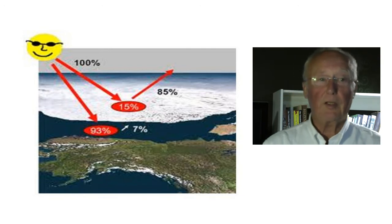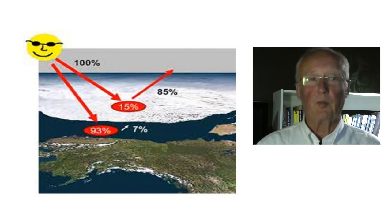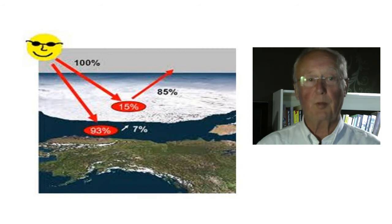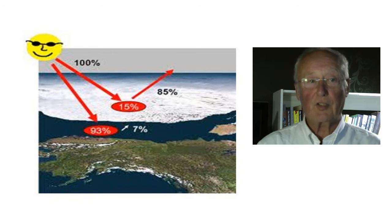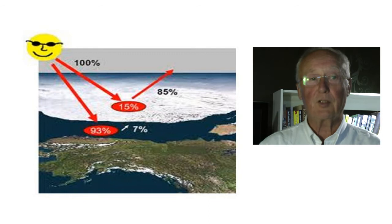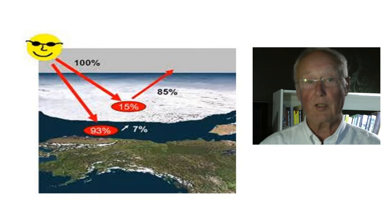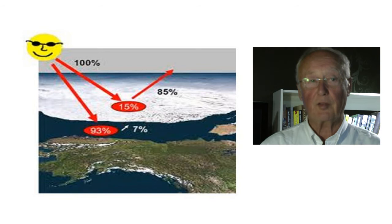This slide illustrates the relative heat-absorbing or reflecting characteristics between bright ice and the blue ocean, or between snow and brown-green soil. Bright white ice reflects 85% of the sun's heat back out into space, and the dark ocean absorbs 93% of the heat. So there is a very big difference.